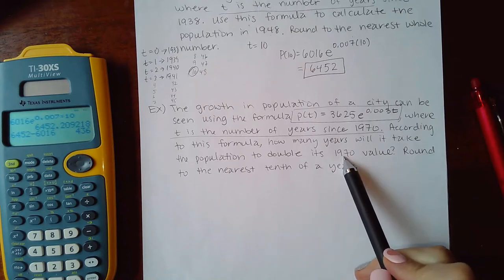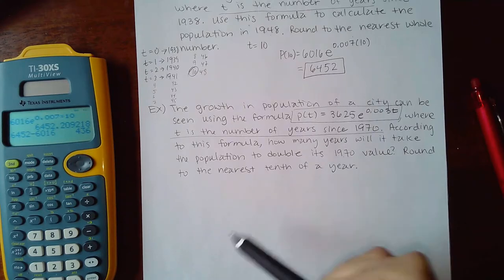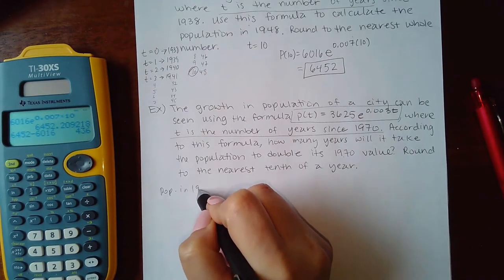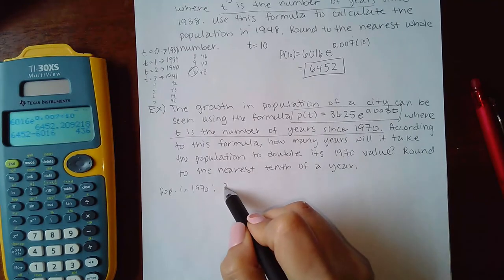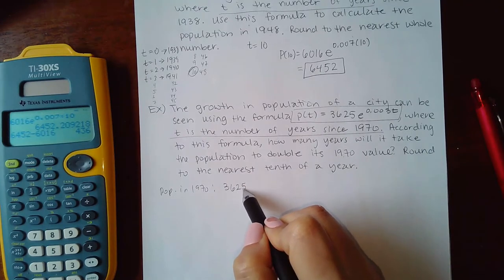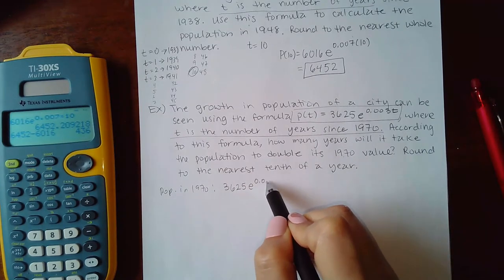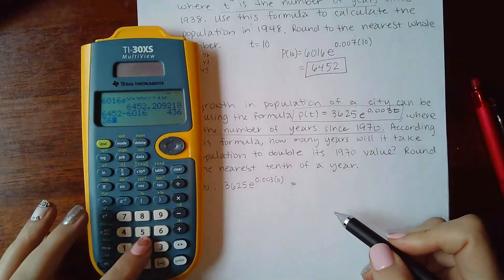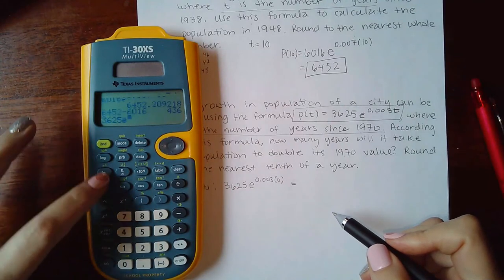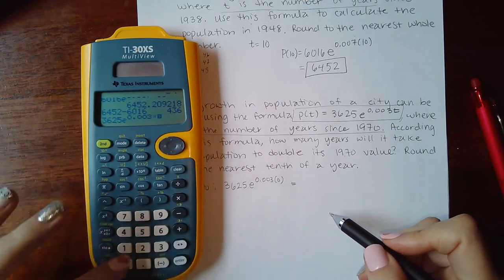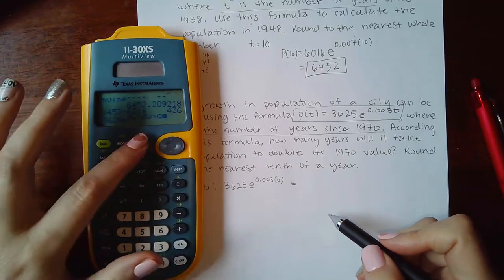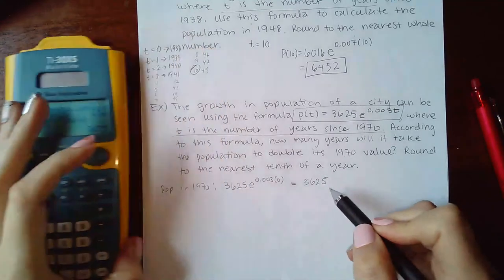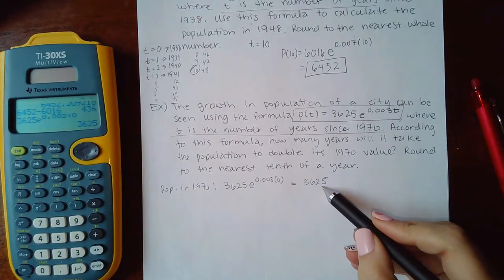So this is important, in 1970 that would mean no years have passed, right? So what was the population in 1970? You get that by plugging in zero for the time since no years have passed. And so what do I get here? 3625 e to the 0.003 times zero, we just get 3625.